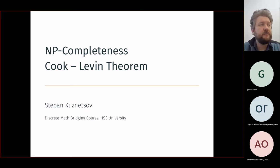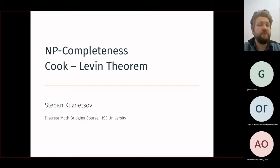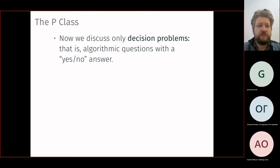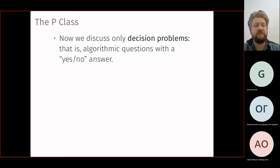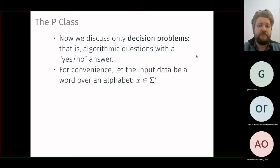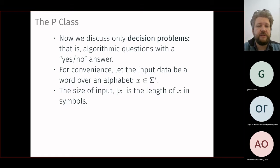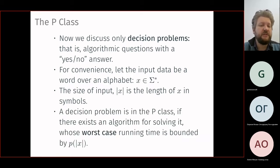Good morning and welcome to the fourth lecture. Today the main point will be proving the Cook-Levin theorem. We'll recall its formulation with a short recap. We have the P class — this is the class of decision problems, algorithmic questions with yes/no answers. The input data is encoded over some alphabet with length n, and the worst-case complexity should be bounded by a polynomial of the input length.